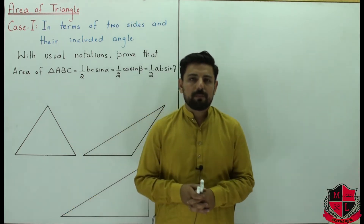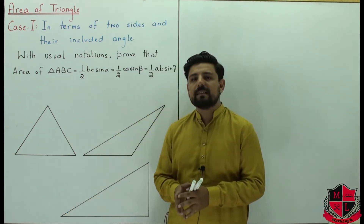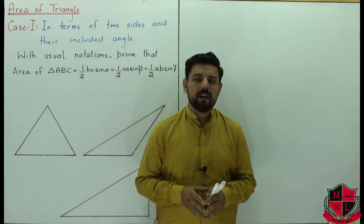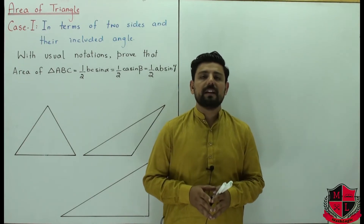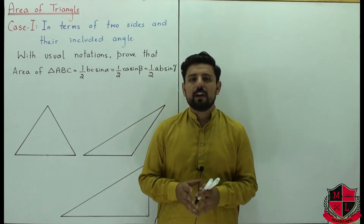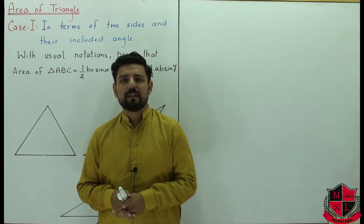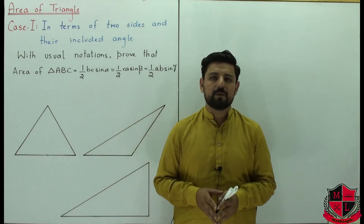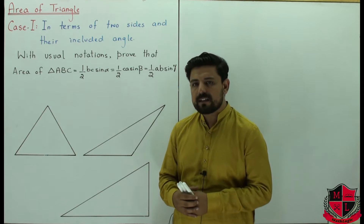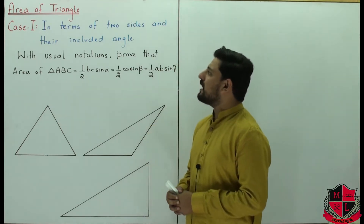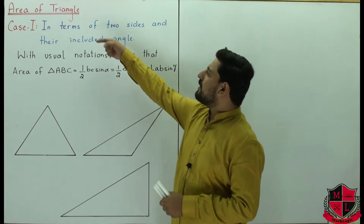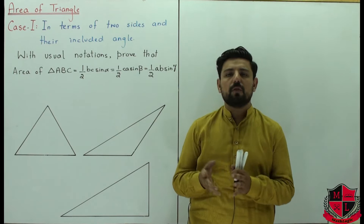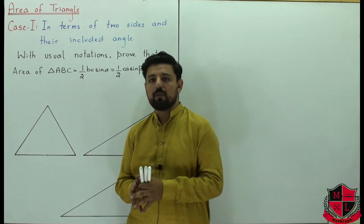We are talking about the first year unit number 12. In the previous lectures we learned to solve triangles, dealing with different cases of the triangle. Today we start talking about the area of triangles — the formulas we can utilize and when to use each formula. There are different cases in this as well. Today we talk about the area of triangles in terms of two sides and their included angle. Given two sides and the included angle, what is the formula?